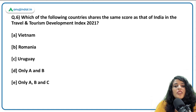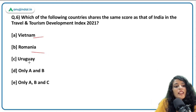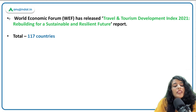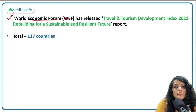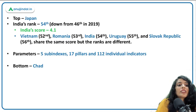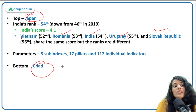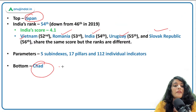The Travel and Tourism Development Index is released by the World Economic Forum, headquartered in Switzerland. It assessed 117 countries. India shares the same score as Vietnam, Romania, and Uruguay — though their ranks differ. The Slovak Republic also shares the same score. Japan ranked topmost while China ranked at the bottom.